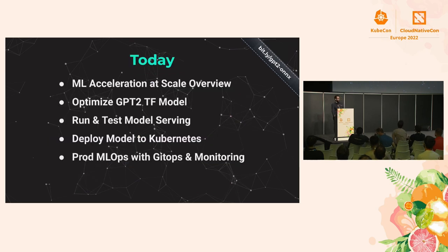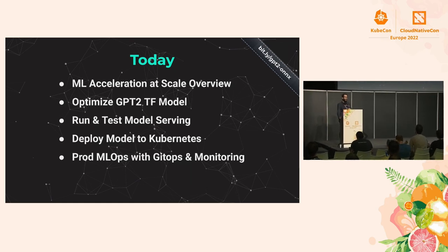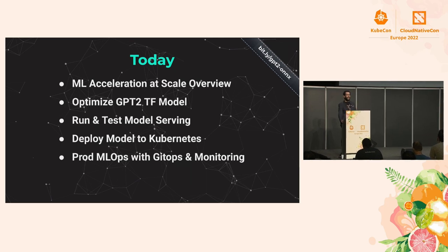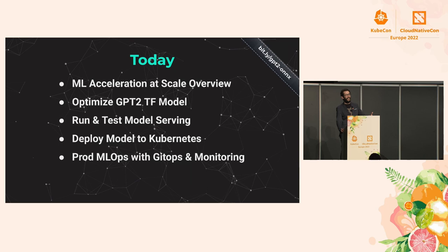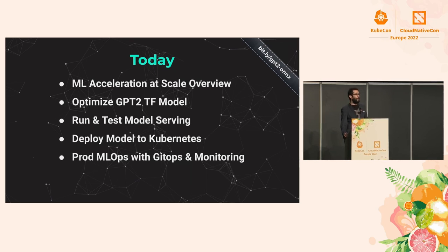We're going to be taking a use case — text generation with the exciting GPT-2 model — and showcasing how to perform optimizations on machine learning. This is a Kubernetes conference, not a machine learning conference, so we're going to be covering the steps of productionizing those models, the nuances of how practicalities change when dealing with machine learning versus normal software, and then how to deploy and scale this in a Kubernetes cluster. Finally, we'll cover cloud native best practices like GitOps and operational monitoring adapted into the machine learning space.